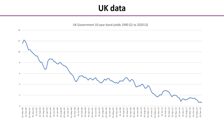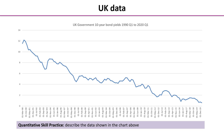Here's some UK data on 10-year bond yields from 1990 to 2020. Have a look and see what you can see. Overall, it's fallen from around 11.5% to 12% back in 1990 all the way down to about a half to a third of 1%. For the quantitative skill practice, describe the data in the chart — imagine you're telling somebody on the radio what's happening, covering the overall trend, where the big variations are, and whether it's volatile or not. Pause the video and have a go.